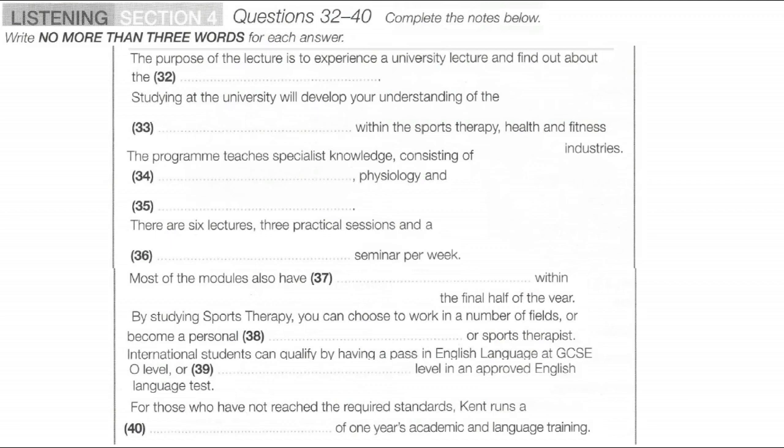At stage one, the first half of the year is assessed by 100% coursework and observed assessments. A majority of the modules also have written exams within the final half of the year, with the rest practically assessed. Stage two and three assessment varies from 100% coursework to a combination of examination and coursework, usually in the ratio 50-50, 60-40, or 80-20.